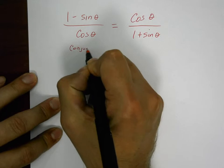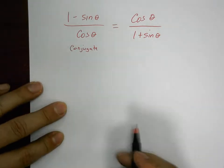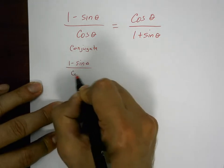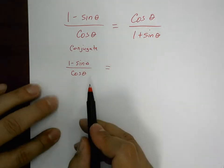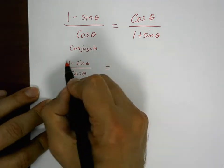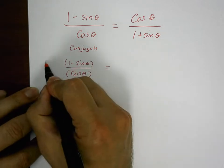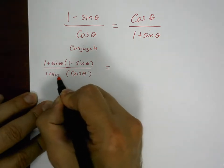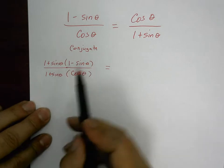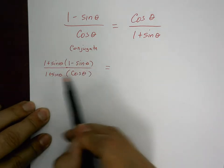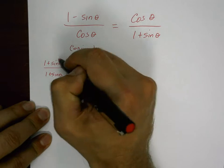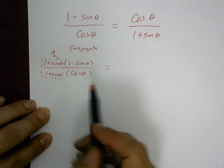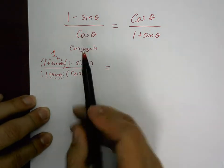So I'm going to take one minus sine of theta over cosine of theta, and multiply both the numerator and denominator by one plus sine of theta. What gives you the right to do that? Well, one plus sine of theta over one plus sine of theta is equal to one, so you're not changing anything — you're just multiplying by one.